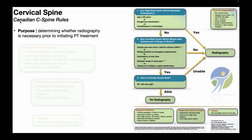In this video, we're going to be discussing the Canadian C-Spine rules. The Canadian C-Spine rules are really just a flowchart — you can see it over here on the right — that are useful for determining whether or not radiography is necessary prior to initiating PT treatment. If someone has endured severe trauma to the head and/or neck, there's always a possibility of a fracture or serious pathology that needs to be ruled out. You just follow these questions in order and work your way through the flowchart.